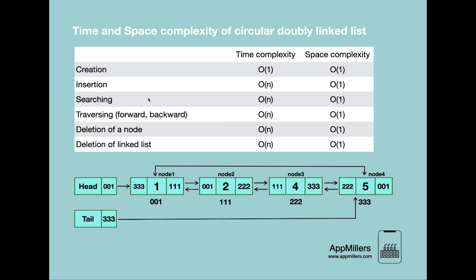The next operation is searching. Searching for a node inside a circular doubly linked list also takes O(n) time complexity because we visit each node and compare its value with the search value. In the worst case, we have to visit all elements. The space complexity is O(1) because no additional space is required for this operation.